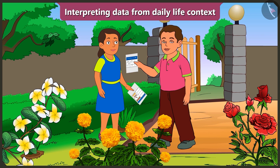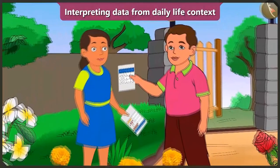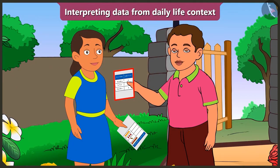Why? I mean to collect the data. But the data about all the blossomed flowers is already filled in this table. That's why you don't need to count the flowers one by one in the garden. Because whatever details are already filled in this table about the flowers, you just need to understand that data. Come on, let me teach you.